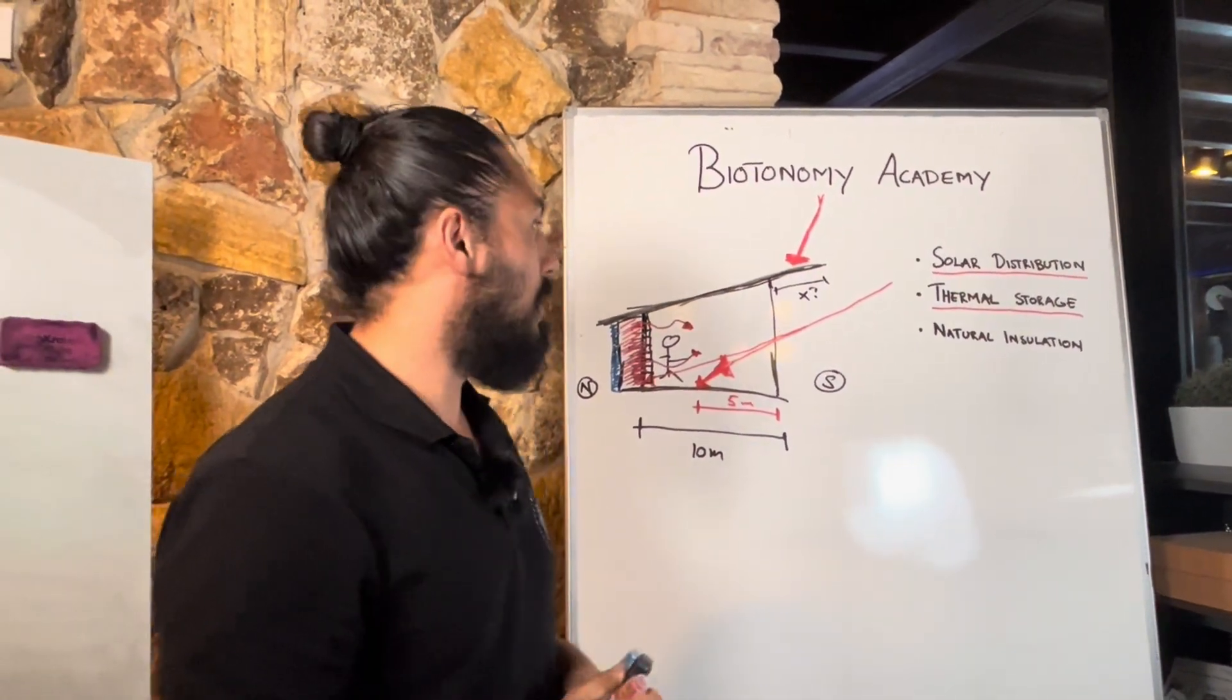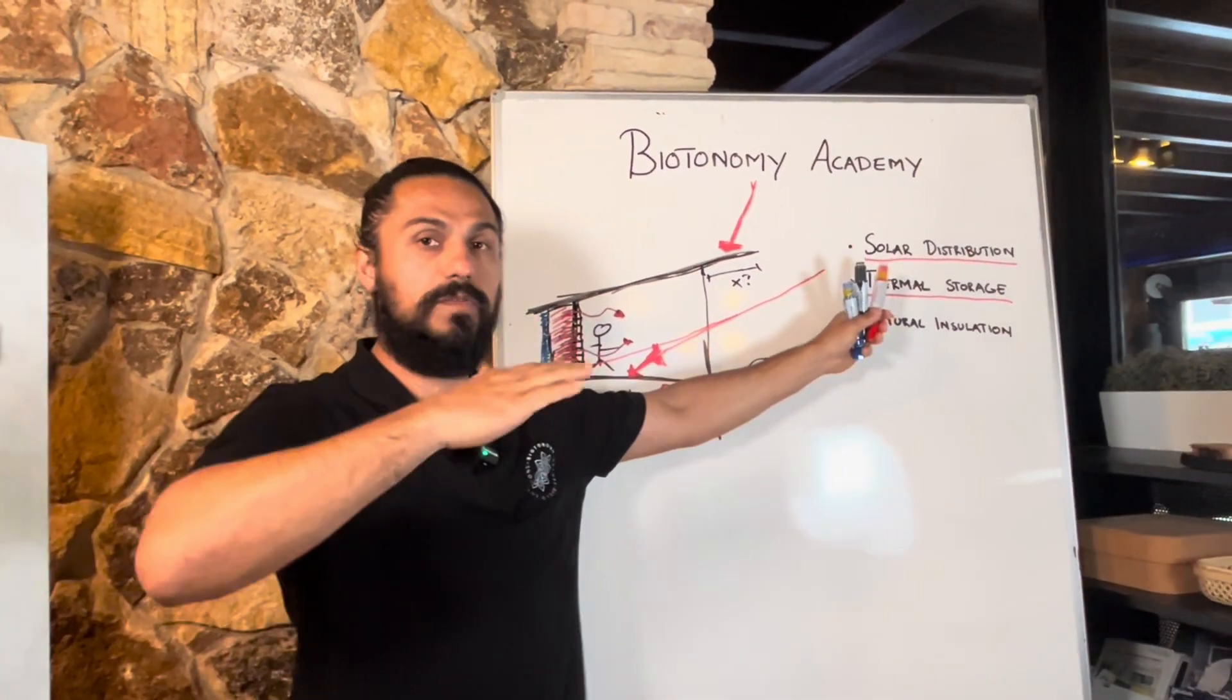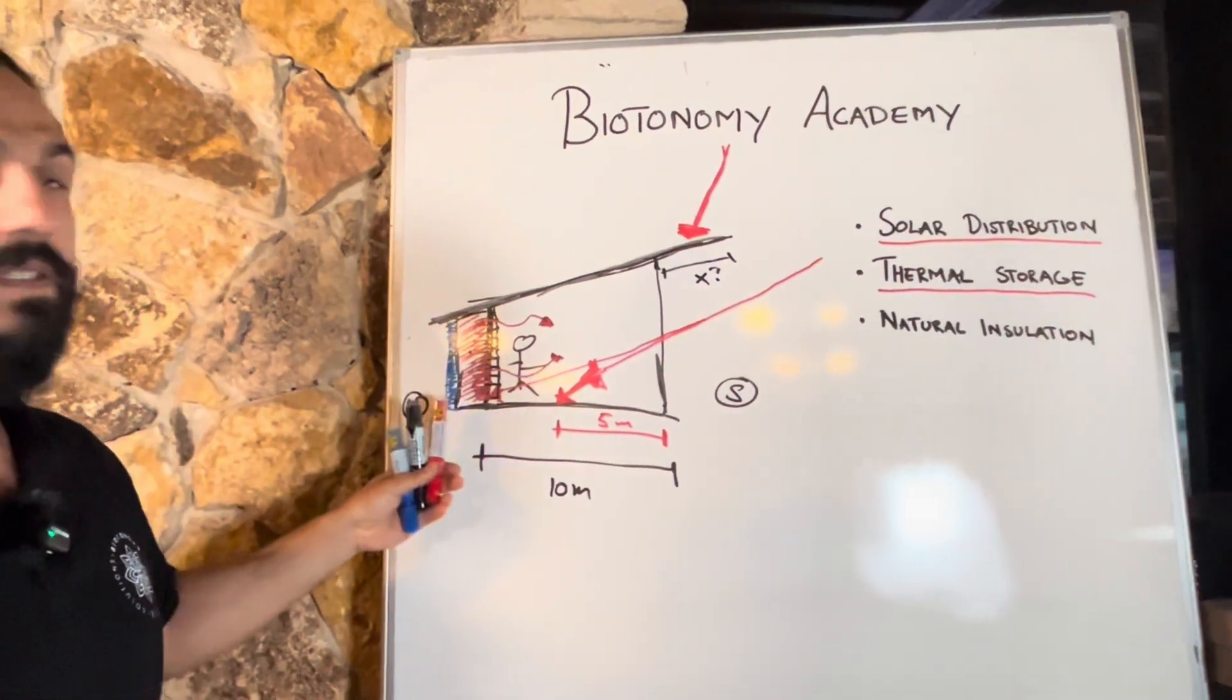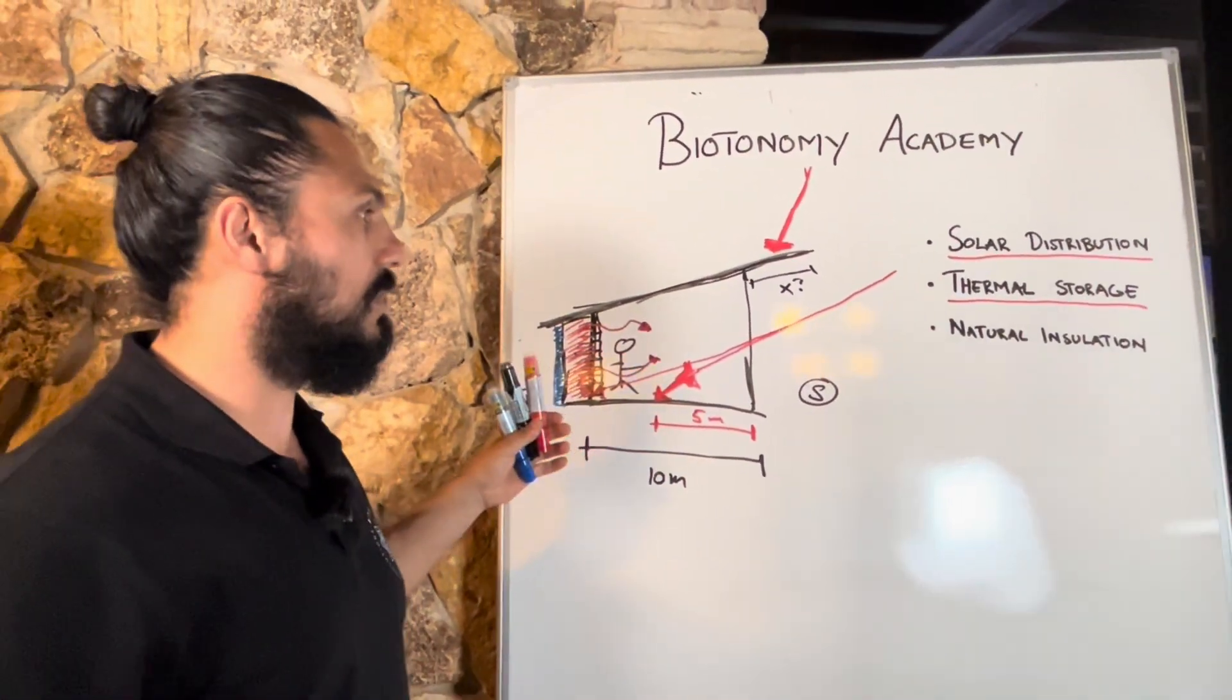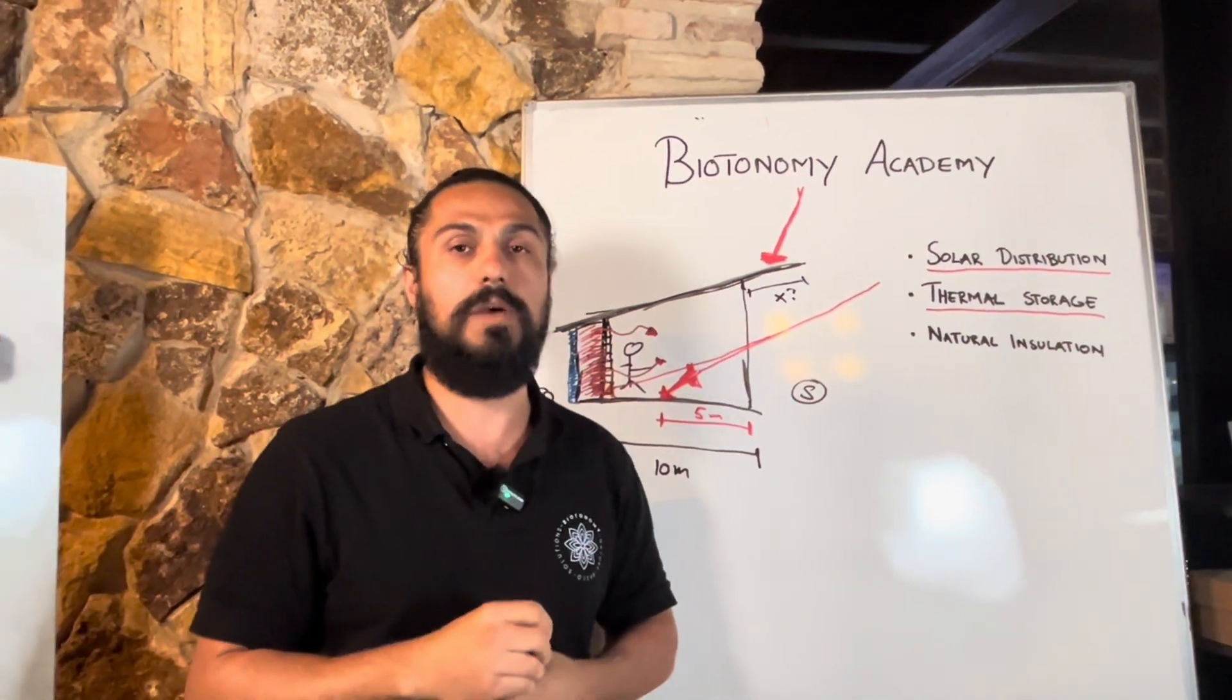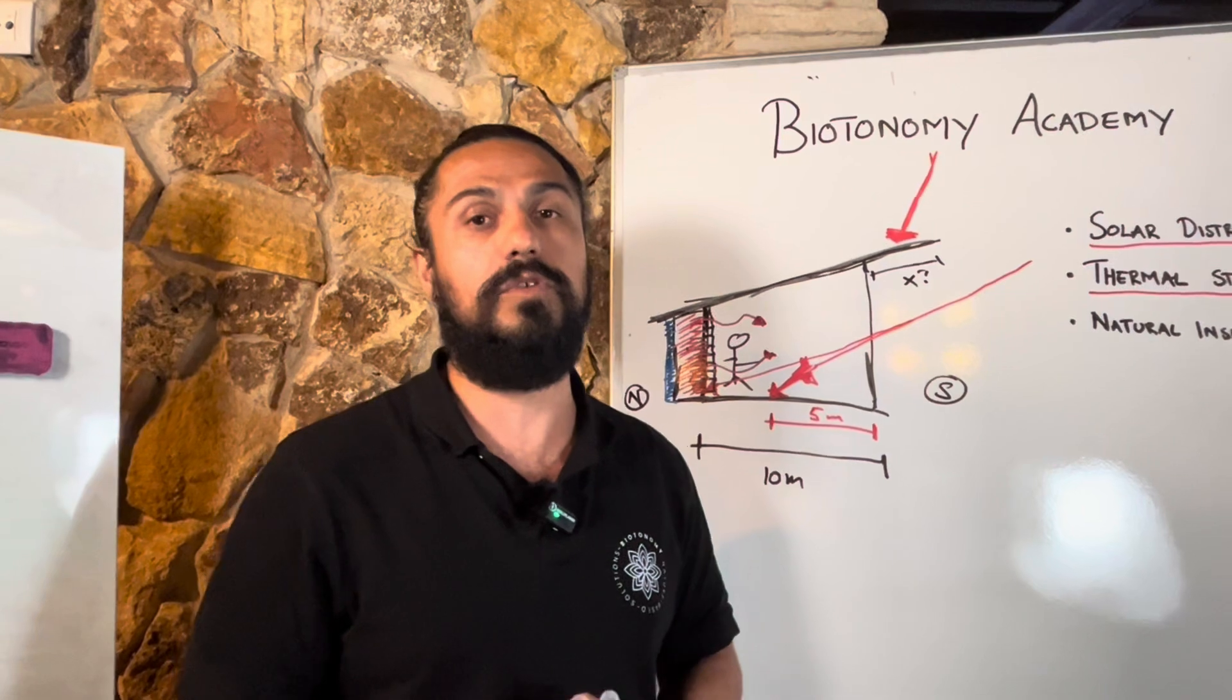So by combining solar distribution, understanding the angles of the sun, by integrating thermal storage inside the structures of your building, you can already achieve very good temperatures inside your house and save yourself a lot of utility bills.